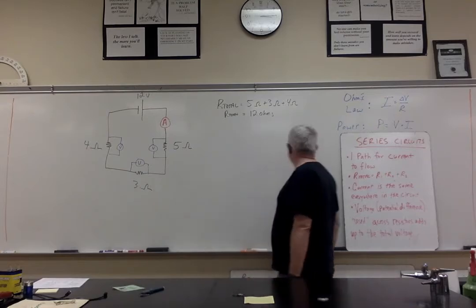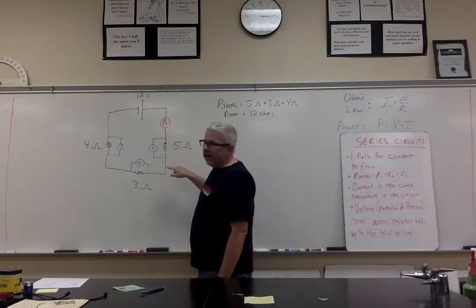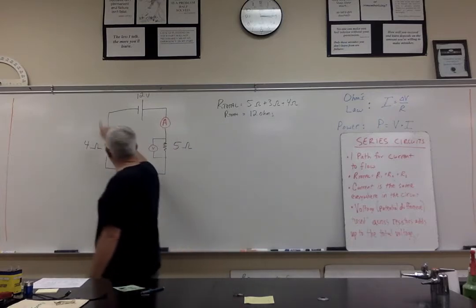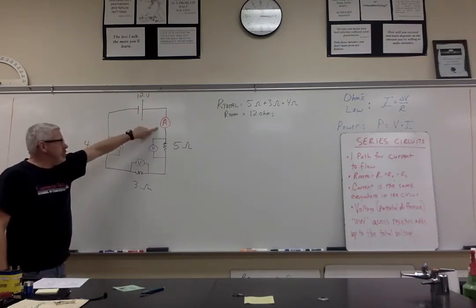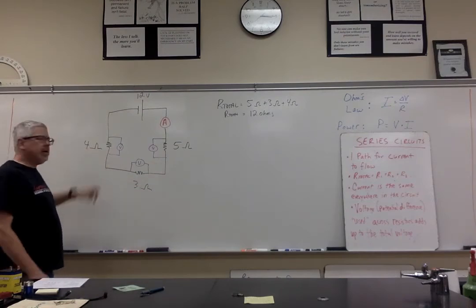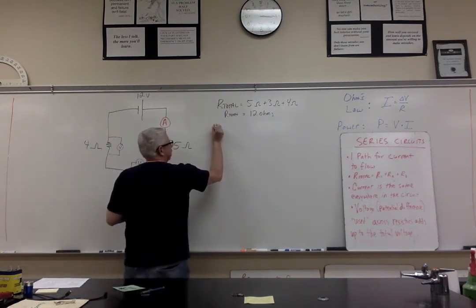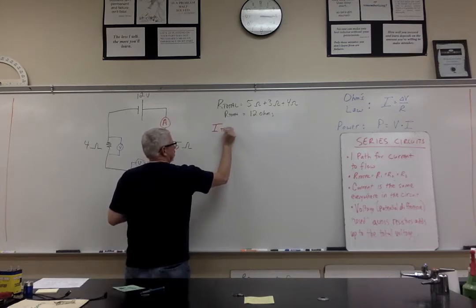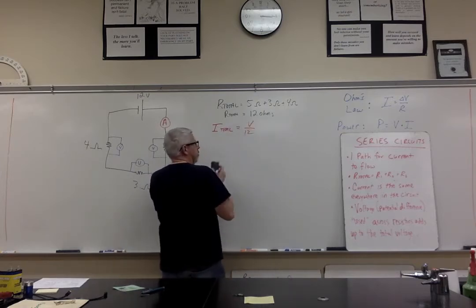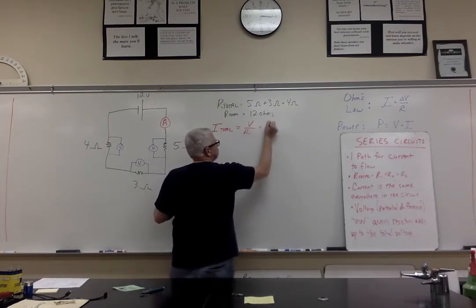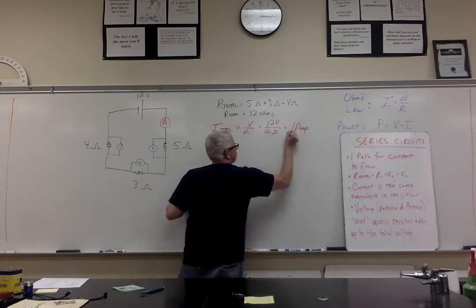So in this particular case, I've got 12 ohms of resistance. The next thing I would probably want to do is figure out the total current — that's the current going through the ammeter. Notice it's not going to matter whether I put the ammeter here or here or here — if there's only one path for the electricity to flow, the current's got to be the same everywhere. The total current equals total voltage divided by total resistance: 12 volts over 12 ohms — that's 1 amp.